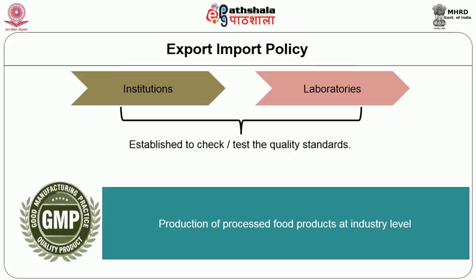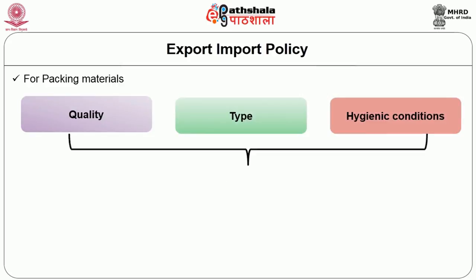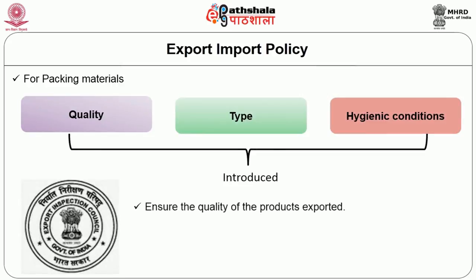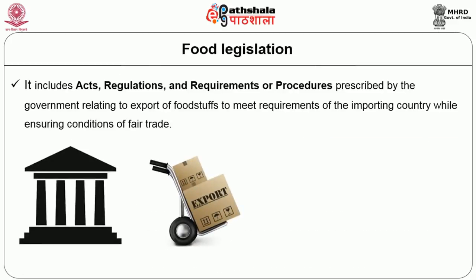For packing materials, quality, type, and hygienic conditions are introduced. European countries are expecting higher standards, especially biodegradable packing materials. In many developing countries, EIC — Export Inspection Council — has been established to ensure the quality of food products exported. Health certificates are also issued based on the requirements of the importing countries. Quality is tested and certificates are issued. Food legislation includes acts, regulations and requirements, and procedures prescribed by the government relating to export of foodstuffs to meet the requirements of the importing country, while encouraging the conditions for fair trade.